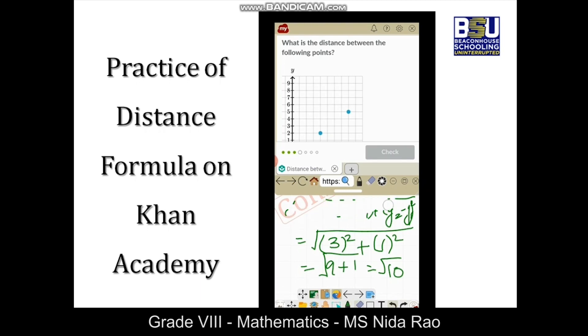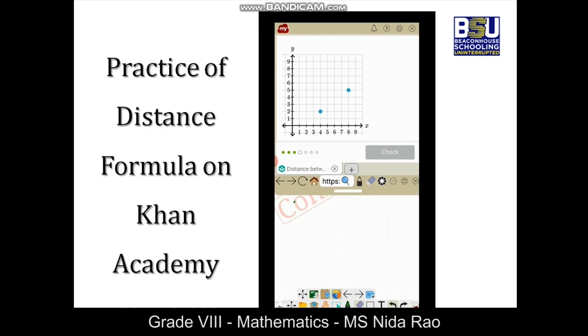Now we will see if the two points on the graph are given. In the last question only the coordinates were given, the graph was not given. Now here the graph is given and they are asking you to find out the distance between two points on the graph. Now if you look at this one, the x coordinate of this point is...